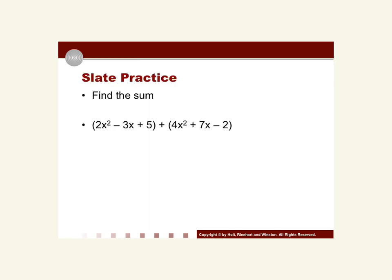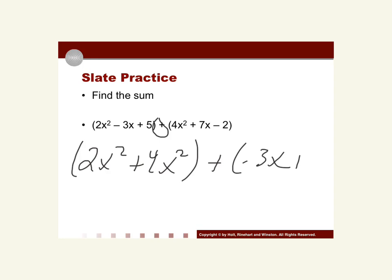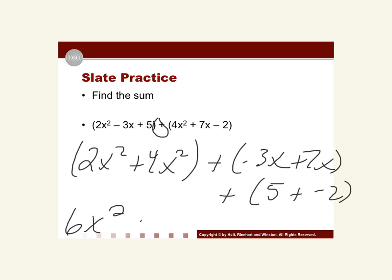Here's an example problem — we call it slate practice — and I'm just going to do an example for you. It's a plus, so we're going to group our like terms together. We have 2x² + 4x², then -3x + 7x, and 5 + (-2). Combining our like terms, we get 6x² + 4x + 3.